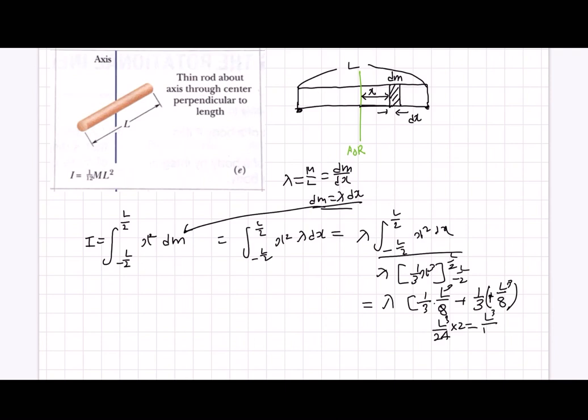Remember that lambda is equal to mass divided by L. You can substitute this value inside. So it would be m over L, and you would have L cubed over 12. And L cancels out, so it would be 1 over 12 mL squared. So this is the answer.